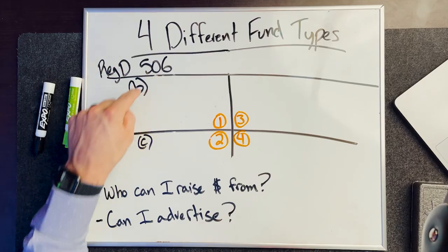We'll also talk about two other fund types that have recently surfaced — crowdfunding and other types of things you can use to raise capital for your offering. But first, let's talk 506B.